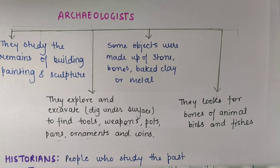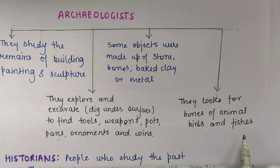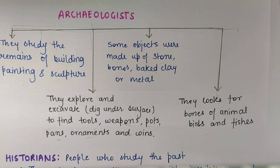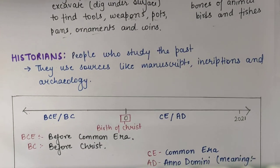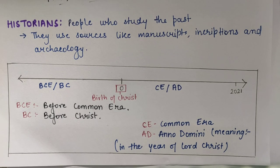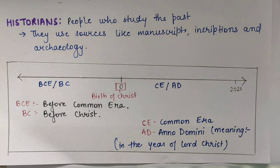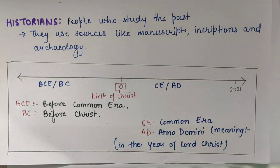They also look for bones of animals, birds and fishes so that they can know about the past — aur in sab cheezon se weapons bante the, bones se weapons bante the. Now, historians. Historians are people who study the past — past ko study karte hain aur humein easy karke batate hain. Jo bhi hum padh rahe hain, ye historians ne likha hai. They use three sources: manuscript, inscription and archaeology.